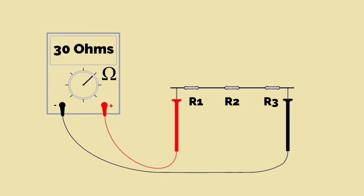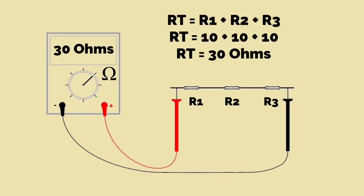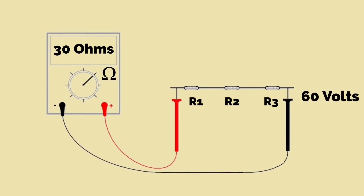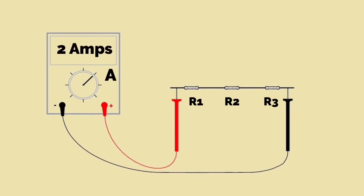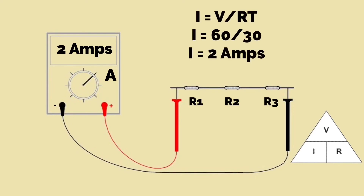If we have three resistors connected in circuit and set the multimeter to measure resistance, it would measure the total circuit resistance. If each resistor is rated at 10 ohms, the total resistance would be 10 plus 10 plus 10, giving a total resistance of 30 ohms. Applying 60 volts to these three 10-ohm resistors in series, the multimeter set to measure current performs the Ohm's law calculation: I equals V divided by R, so current equals 60 divided by 30.